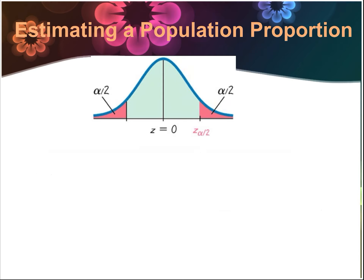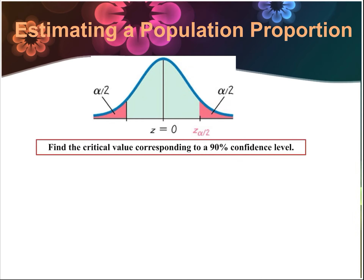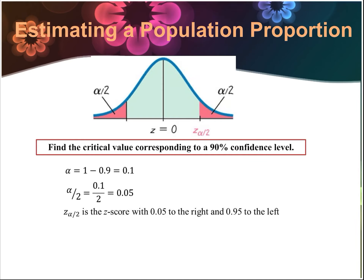Let's find the critical value corresponding to a 90% confidence level. 90% of our values should appear in the green, meaning 10% are in the red section — 5% in the top and 5% in the bottom. Alpha is 1 minus 0.9, so 0.1. Half of that is 0.05. Z sub alpha over 2 is the z-score with 0.05 to the right, or in other words, 0.95 to the left.